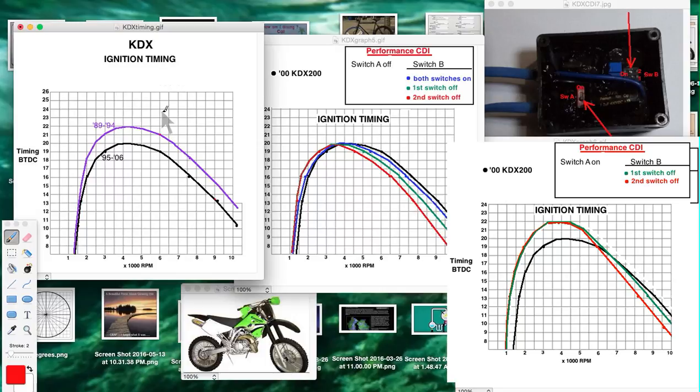If you look at the far left graph here, you'll see in purple the standard timing curve for the 89 to 94 models and the black is the 95 to 06 models.